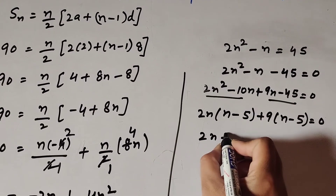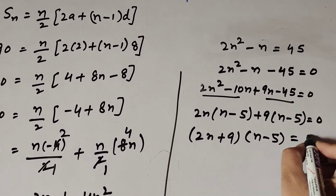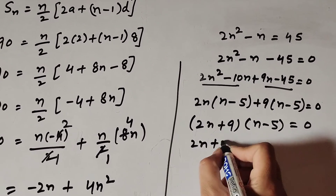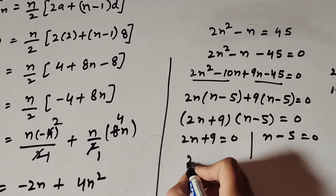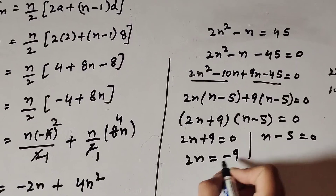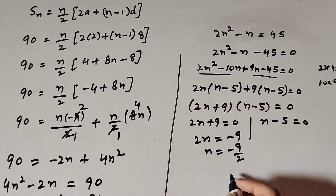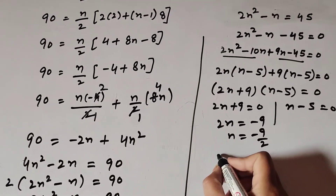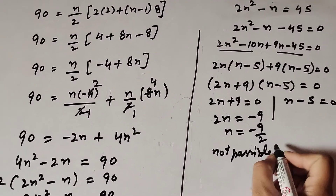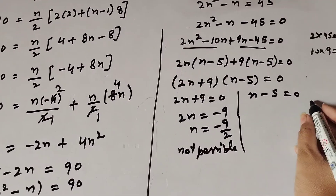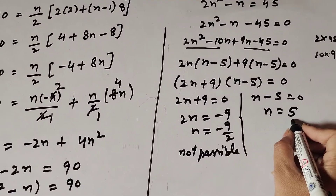Factoring gives 2n plus 9 into n minus 5 equals 0. So either 2n plus 9 equals 0 giving n equals minus 9 over 2, which is not possible since the number of terms cannot be negative or fractional. Therefore n minus 5 equals 0, giving n equals 5.